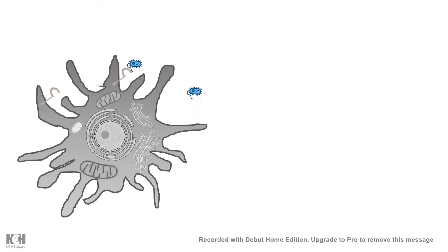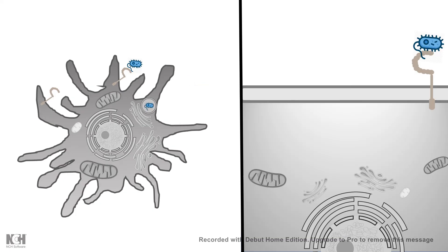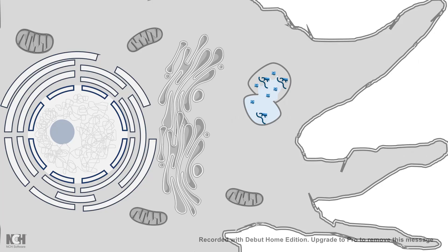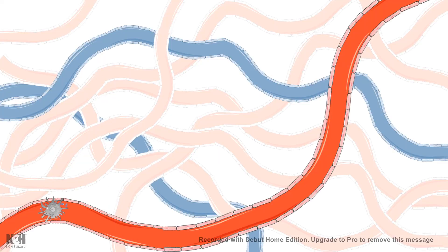Dendritic cells do the same thing. They have pathogen recognition receptors to understand what kind of pathogen has entered the body. They engulf the pathogen using their long dendrite-like processes, degrade it internally, and display part of the pathogen on the class 2 MHC molecules on their surface. Once displaying the pathogen-derived antigen, the dendritic cell migrates to the lymph node to report the hostile environment to T and B cells.